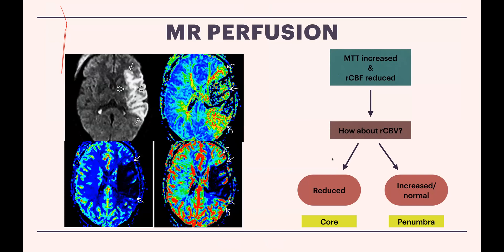MR perfusion uses the same concept as CT perfusion — MTT, CBF, and CBV — to assess for core infarct and penumbra in stroke.